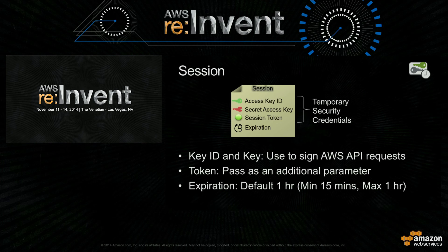We have two types of credentials in IAM: long-term credentials and short-term credentials, or temporary security credentials. When you create an IAM user in AWS and assign credentials — access key ID and secret access key — those are long-term, meaning until you revoke those credentials or delete that user, those are going to be valid.